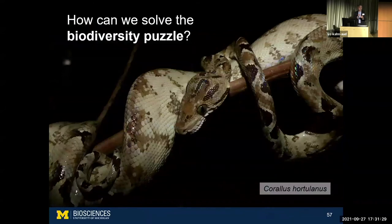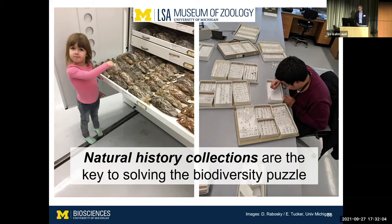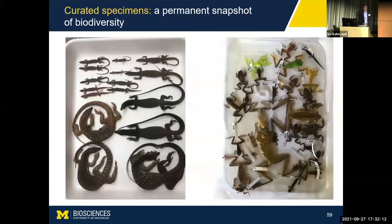So where does this leave us? This biodiversity puzzle is a hard problem, we need tons of additional data, and we are literally burning the data we need before we can even collect it. What I believe is that our natural history collections are actually the key to solving this biodiversity puzzle. Here at the University of Michigan, we have one of the world's largest biodiversity research facilities. These museums contain snapshots of species diversity in space and time — snapshots we can use to understand how and why there are so many species in places like the Amazon. These dead animals are a source of the living data we need to answer some of the most fundamental questions about how our Earth works.